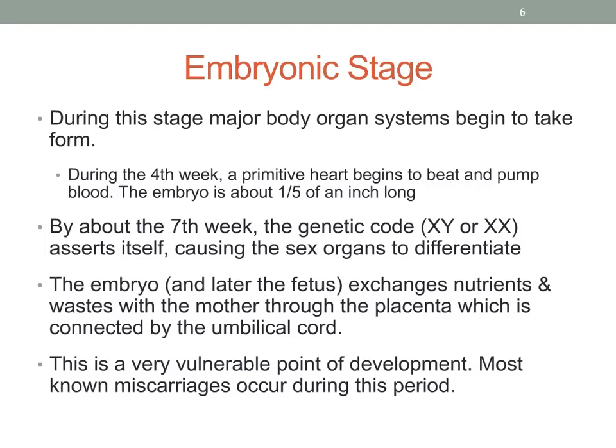At this time, the embryo is about one-fifth of an inch long. By about the seventh week, the genetic code asserts itself causing the sex organs to differentiate — we can see the emerging vagina and penis, associated with sex differentiation. The embryo, and later the fetus, exchanges nutrients as well as waste with the mom through the placenta, which is connected by the umbilical cord. Most known miscarriages occur during this embryonic stage.